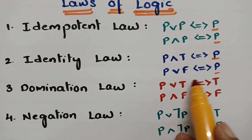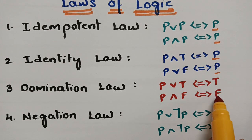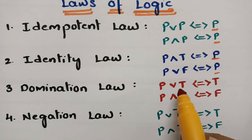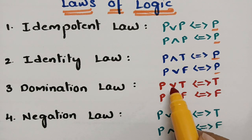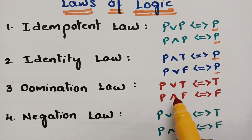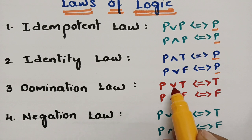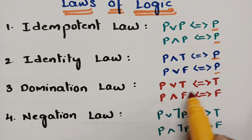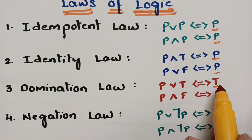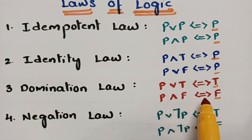Next one is the domination law. Here, true and false are dominating. The signs are opposite to identity law: if identity law uses conjunction, domination uses disjunction, and vice versa. So p OR true equals true, and p AND false equals false. Here the proposition p won't appear in the result — only true or false will come. This is the domination law.